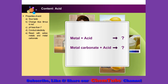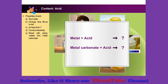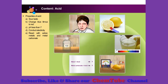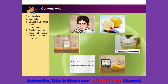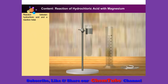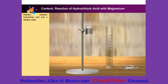What happens when acid reacts with metal or metal carbonate? Let's carry out an activity to study the chemical properties of acids. Let's take a look at the reaction of hydrochloric acid with magnesium.